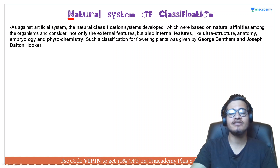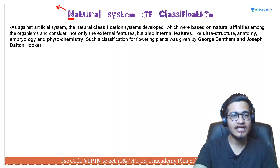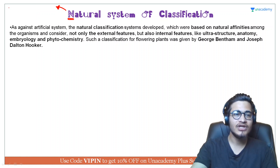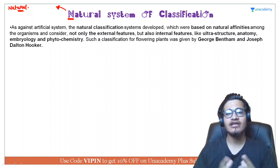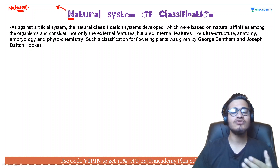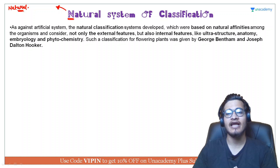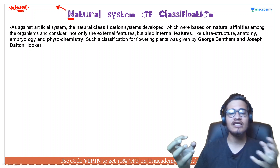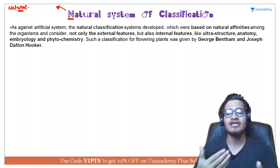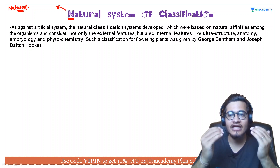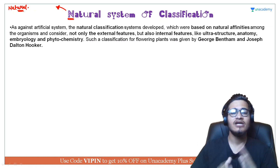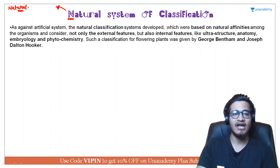Now let's come to the topic — natural system of classification. Jaisa ki hum logon ne kaha, artificial system mein natural affinities ko zyada mahatv nahi diya gaya. Nature ne humein interaction ki capability bhi di hai — ek individual kai baar doosre individual se personally bahut zyada attach ho jaata hai. For example, lichen — jisme ek algae aur fungi bahut zyada interact karte hain, aur unki aapsi interaction unki life cycle complete karne mein bahut crucial hai. Such interactions aur internal characters are also taken into consideration in the natural system.